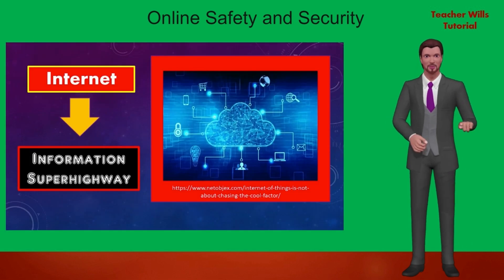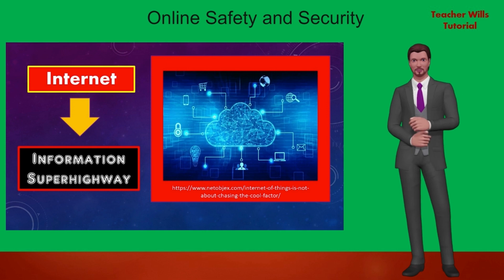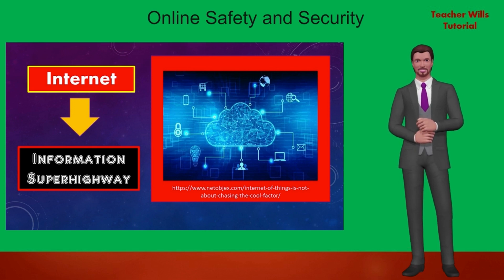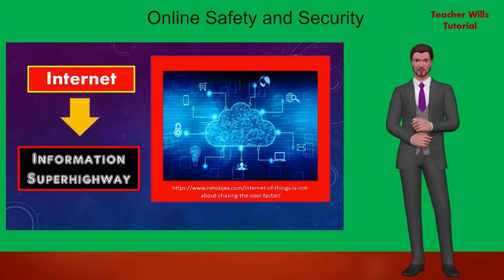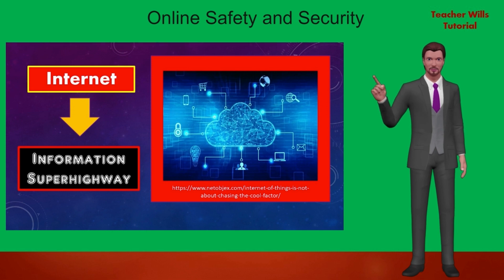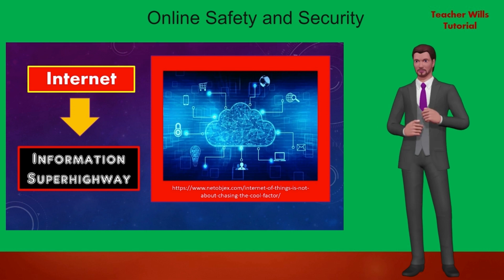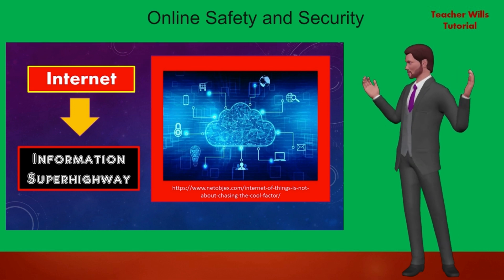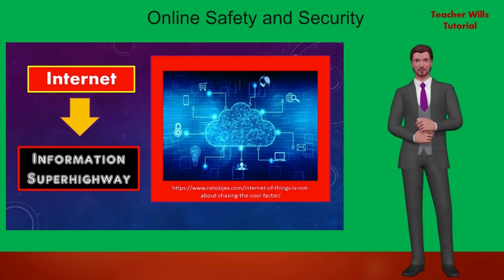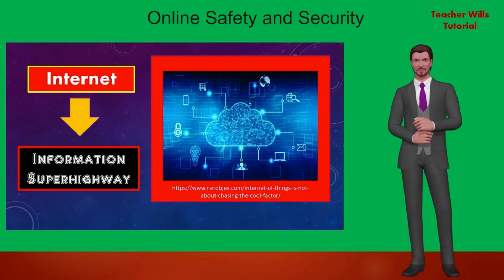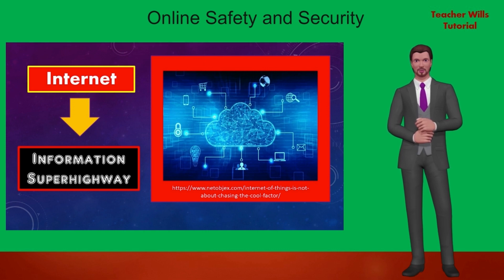The internet is defined as the information superhighway. This means that anyone has access to this highway, can place information, and can grab that information. Any information, even things that you have set privately, can be accessed one way or another. This is why social networking sites like Facebook continue to improve their security features. The threat of a cyber crime is very real. While you may not experience the threat now, whatever information we share today could affect our future.